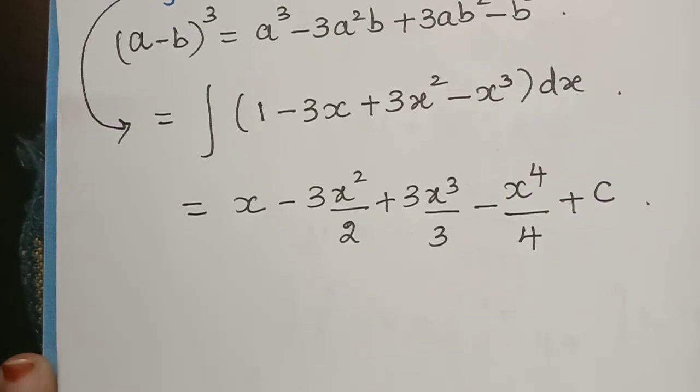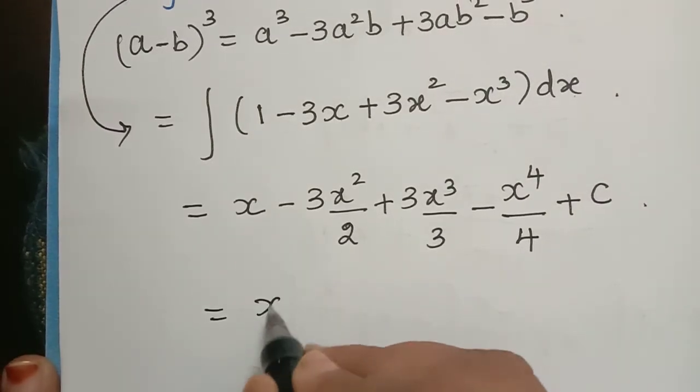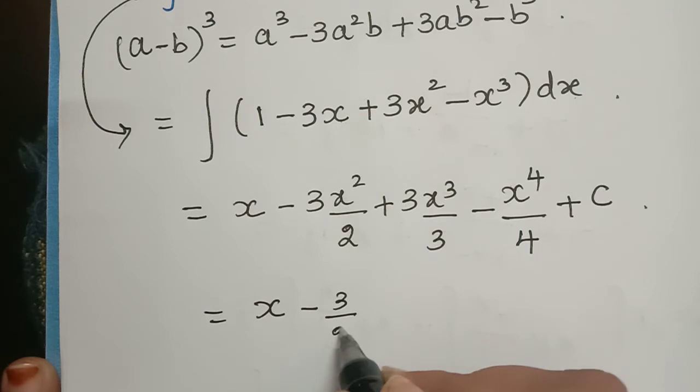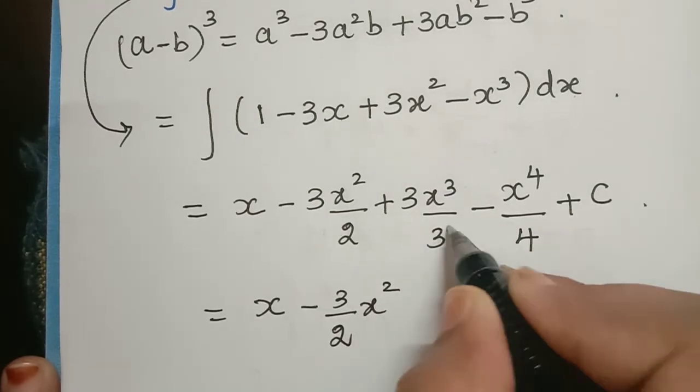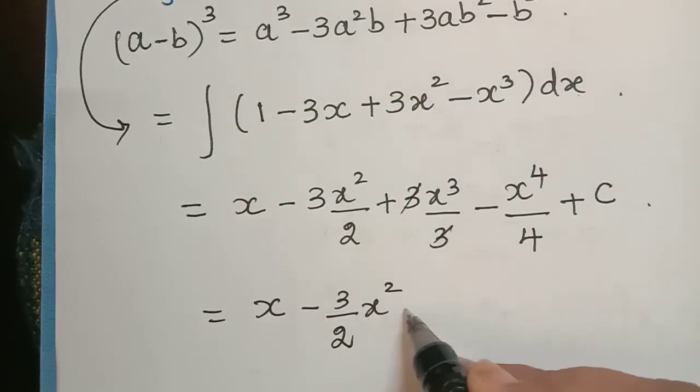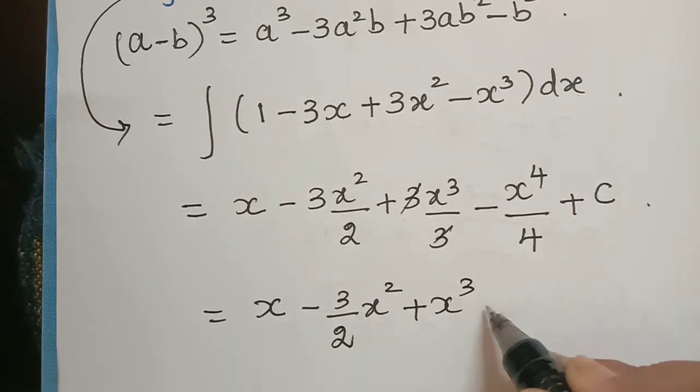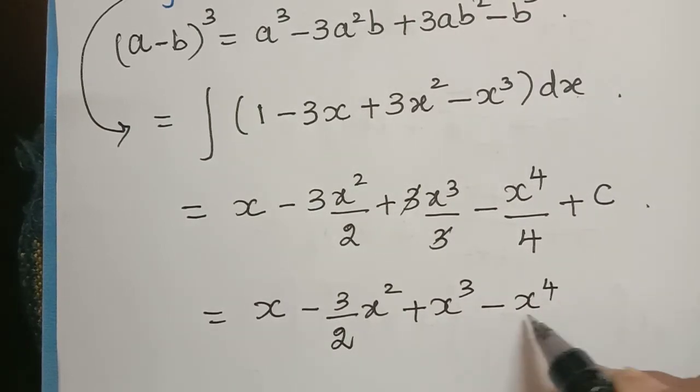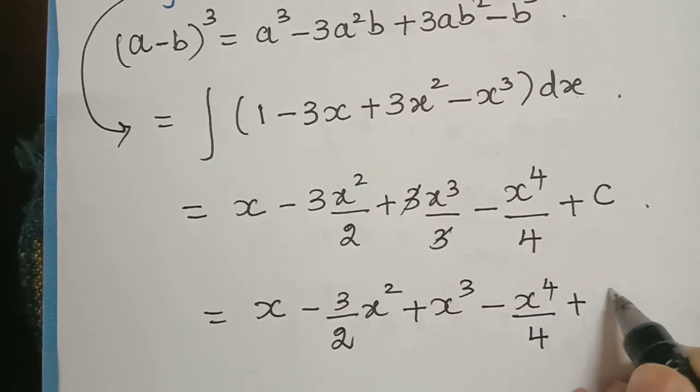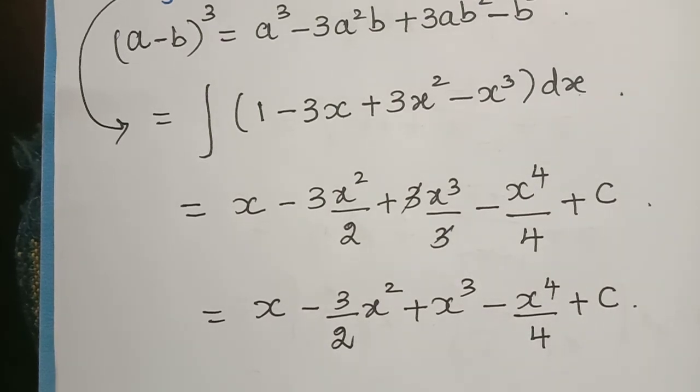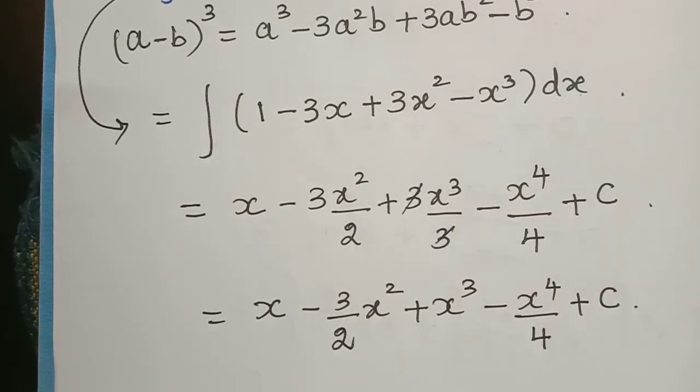So on simplifying this furthermore we get it as x - 3x²/2, and this 3 gets cancelled so plus x³ minus x⁴/4 plus c. So this is the answer. Hope you have understood this problem. Thank you.